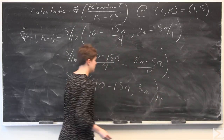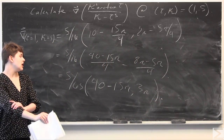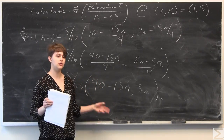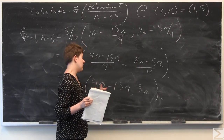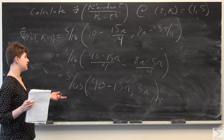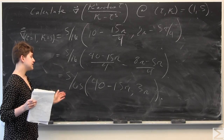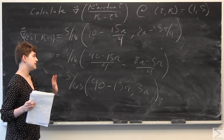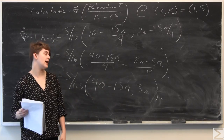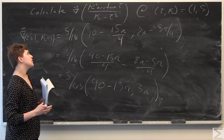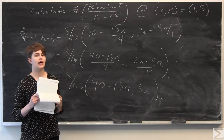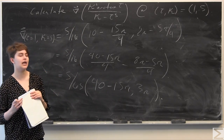That's the simplest form we can get to. There are no more common constant factors that appear in both components. So our final answer is 5 over 64 times the vector (40 minus 15 pi, 3 pi). That is the gradient of this function of tau and kappa, evaluated at the point tau equals 1 and kappa equals 5.